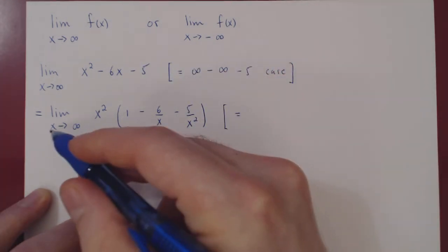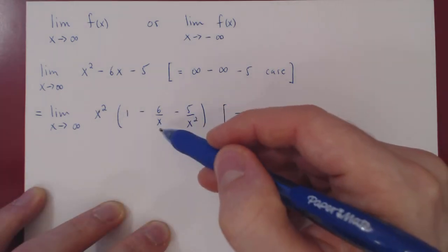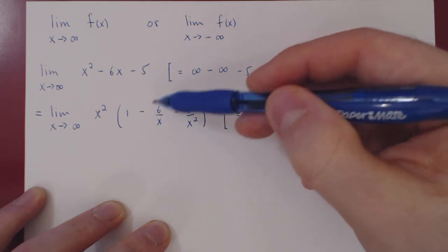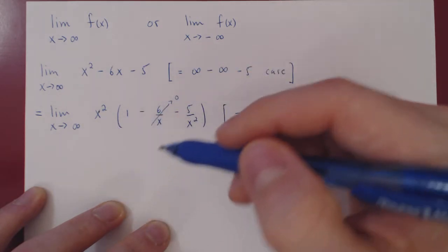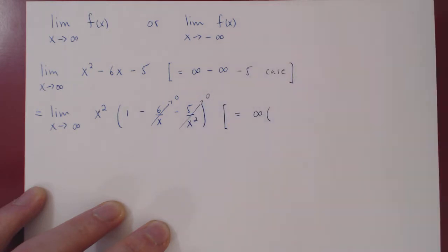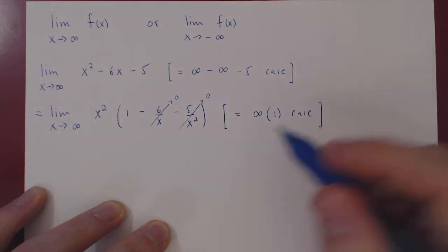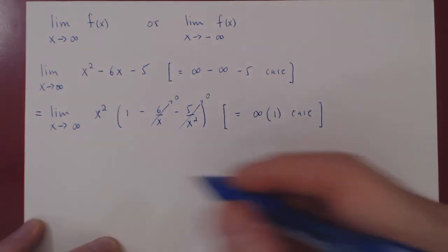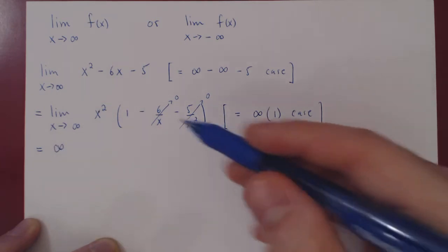As x approaches positive infinity, so does x squared. As x goes to infinity, 6 over x — if you divide 6 by a number that is getting bigger and bigger, the fraction will be getting smaller and smaller, so this will shrink to 0. The same for 5 over x squared: as x goes to positive infinity, so does x squared, and 5 over x squared will also shrink to 0. So the second term approaches 1. By factoring out x squared, the case is now infinity times 1, which obviously gives an answer of infinity. Always a one-line solution.